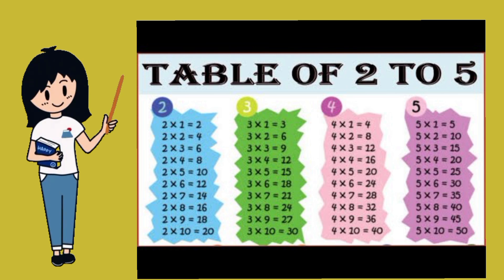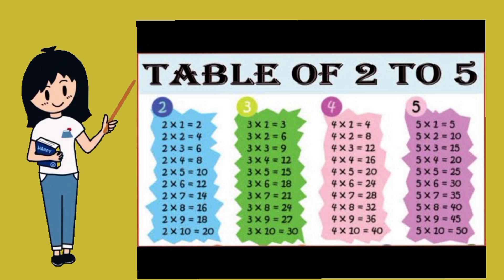Three tens are thirty. Three ones are three. Three twos are six. Three threes are nine. Three fours are twelve. Three fives are fifteen. Three sixes are eighteen. Three sevens are twenty-one. Three eights are twenty-four. Three nines are twenty-seven. Three tens are thirty.